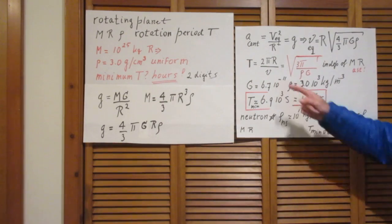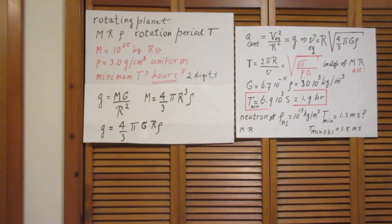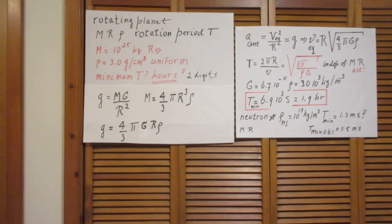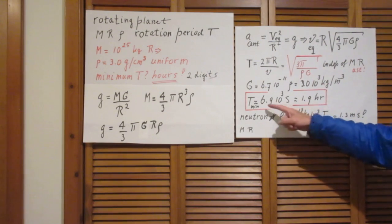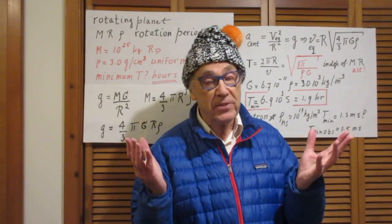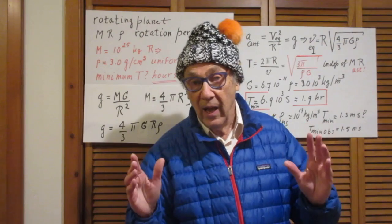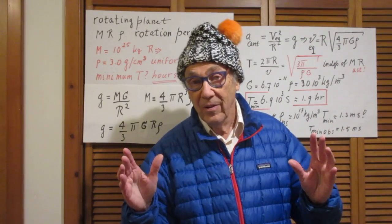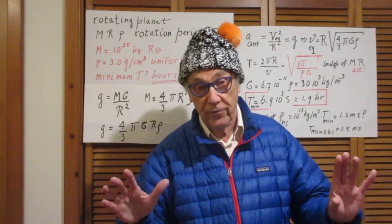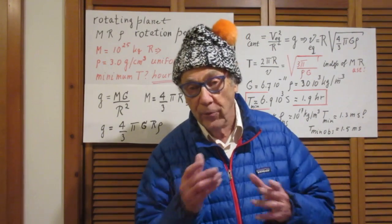So there we go. We take capital G, the gravitational constant, as 6.7 times 10 to the minus 11 in MKS units, and ρ as 3.0 thousand kilograms per cubic meter. Substituting into that equation, I find about 1.9 hours. In a nutshell, no planets should rotate about their own axis any faster than in 1.9 hours. And in fact, no planets have ever been observed that rotate faster. No asteroids have ever been observed that rotate faster than 1.9 hours.